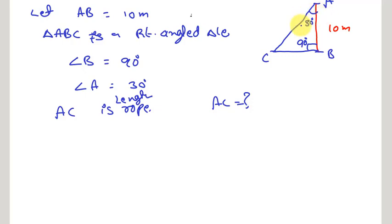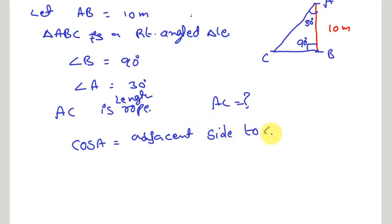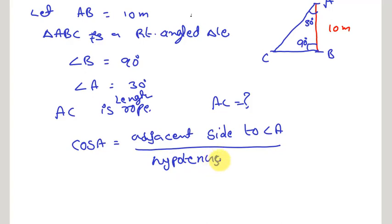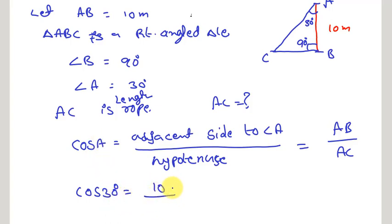Cos A equals adjacent side divided by hypotenuse. The adjacent side to angle A is AB and the hypotenuse is AC. Since angle A is 30 degrees, cos 30° = AB / AC = 10 / AC. We know cos 30° equals √3 / 2.